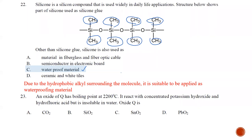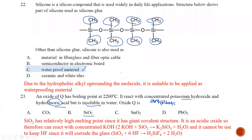Question number twenty-three: an oxide of Q has a boiling point of 2200°C, reacts with concentrated potassium hydroxide and hydrofluoric acid, but is insoluble in water. Hydrofluoric acid is very special and corrosive to SiO2. SiO2 does not dissolve in water. SnO2 and PbO2 are also sparingly soluble in water. The reactions described — reacting with HF and KOH — are describing the reactions that take place with SiO2. The best answer is B.